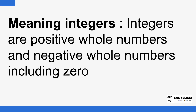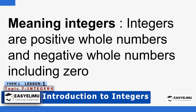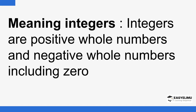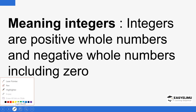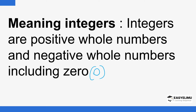So what does it mean when you talk about integers? What is an integer? In simple terms, an integer means positive whole numbers and negative whole numbers, including zero. So zero is part of the set. If you have a whole number that is positive or negative, and zero is part of that — all of that is what we call integers.